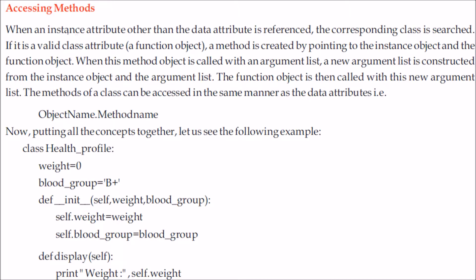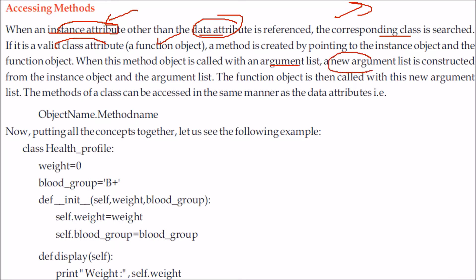Now, how do we access methods? When an instance attribute other than a data attribute is referenced, the class is searched. If a valid class attribute like a function object is found, a method object is created by pointing to the instance object and the function object. When this method object is called with an argument list, a new argument list is constructed from the instance object and the original argument list. The method of the class can be accessed the same way as data attributes — you simply say object_name.method_name.